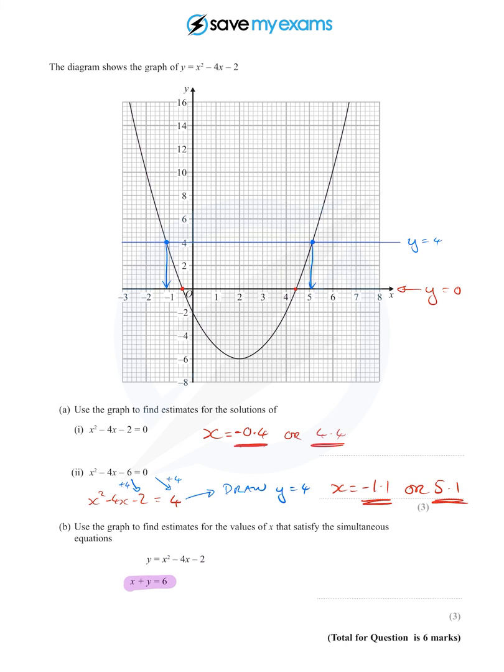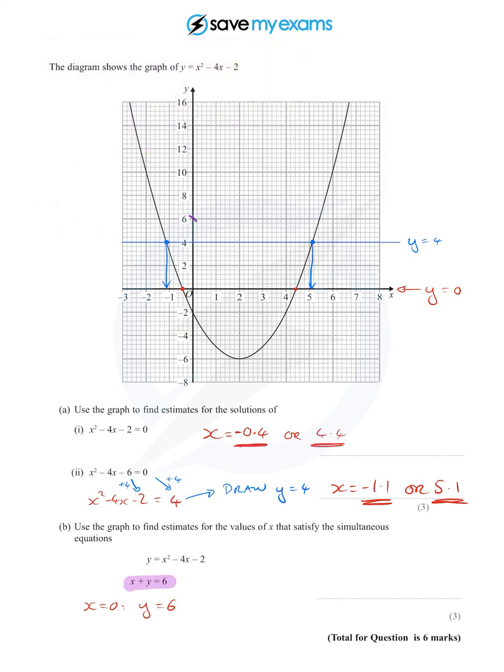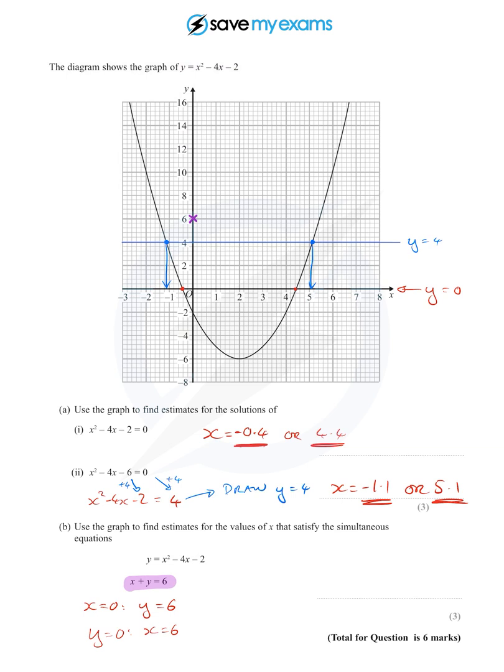Now if you don't know how to draw that, one really easy way of doing that is to find the two points where it cuts the axes. So x = 0 gives me y = 6, so it goes through, and I'm going to do this in a slightly different color, it goes through that point there. And then if I put y = 0, well I get x = 6 from that equation, and so that gives me this point here. And so I need a straight line that goes through those two points.